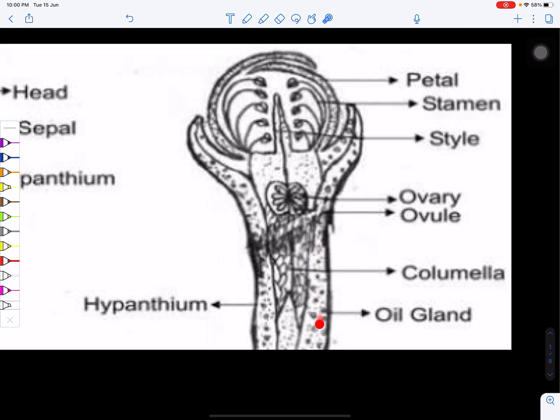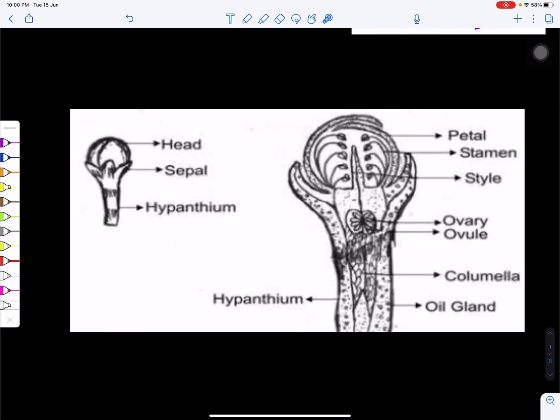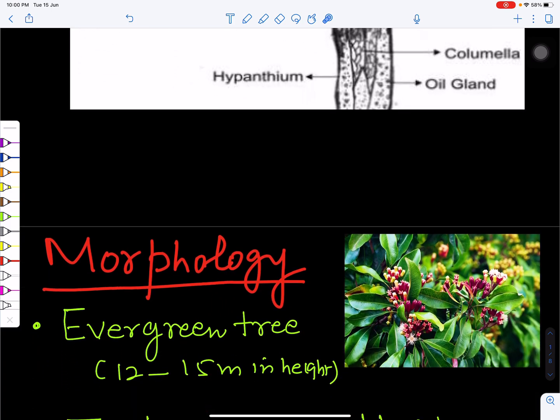This part is having oil gland which is actually encircling or enclosing all the floral parts of the clove. Now this part is ovary having ovules and these are stamens. This outermost whorl is sepals and these are petals. So this unopened floral bud of clove is economically important.